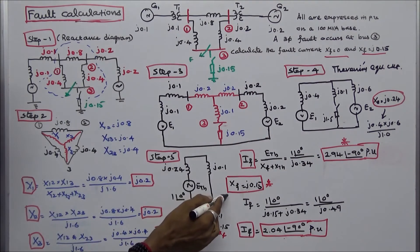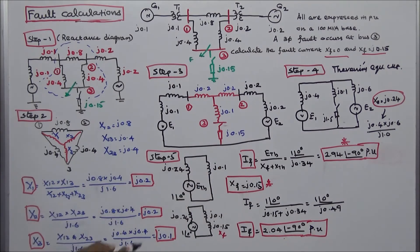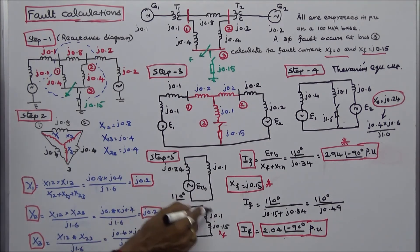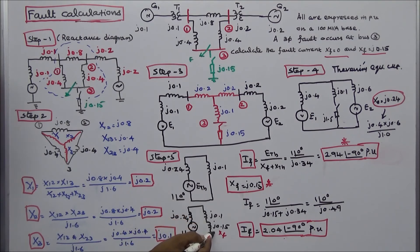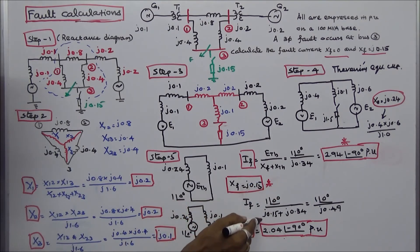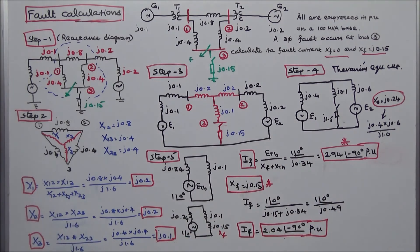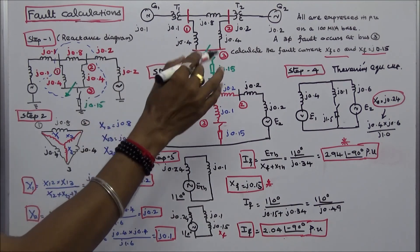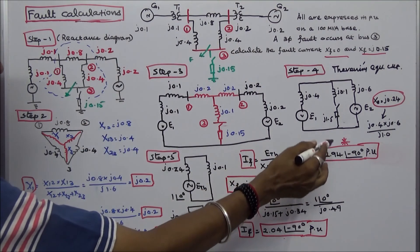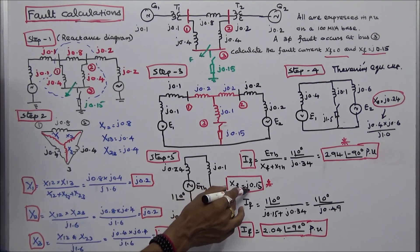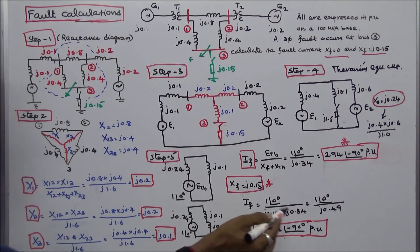Case 2: when Xf equals J.15. Redrawing the circuit, J.24, J.1, and J.15 are all connected in series. X-Thevenin equals J.24 plus J.1 plus J.15, which equals J.49. The fault current equals 1 angle 0 divided by (J.15 + J.34), which equals 1 angle 0 divided by J.49. Therefore fault current IF equals 2.04 angle minus 90 degrees in per unit.